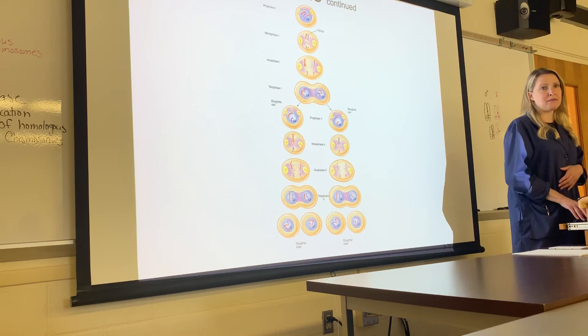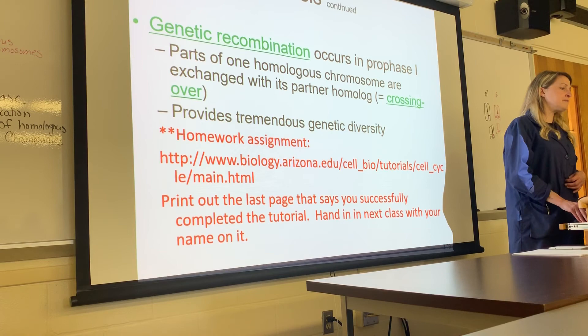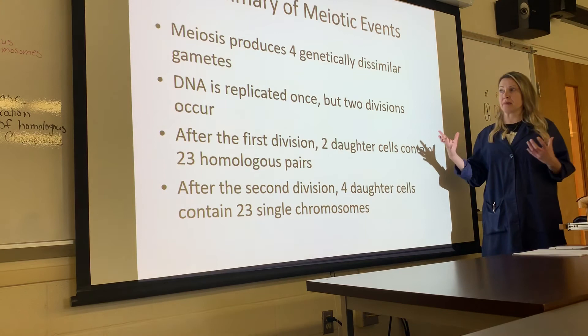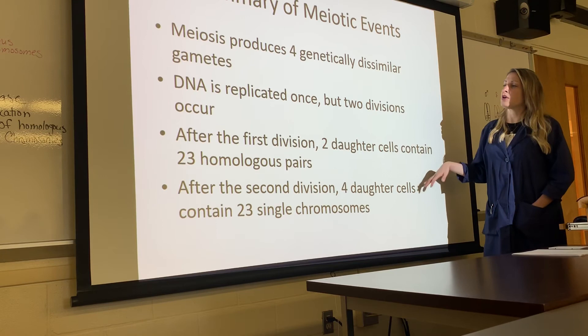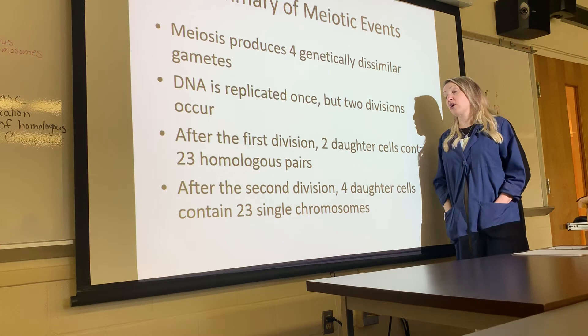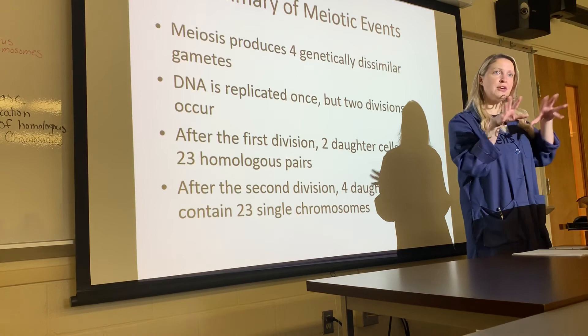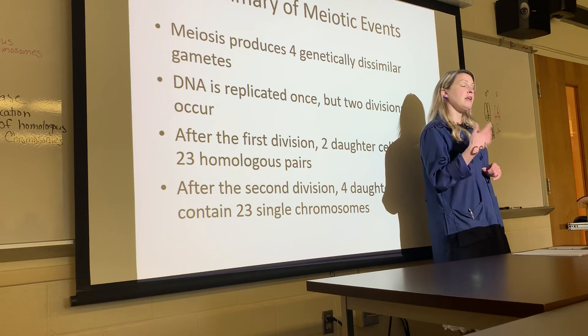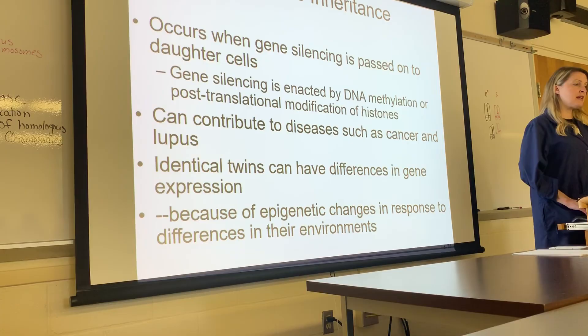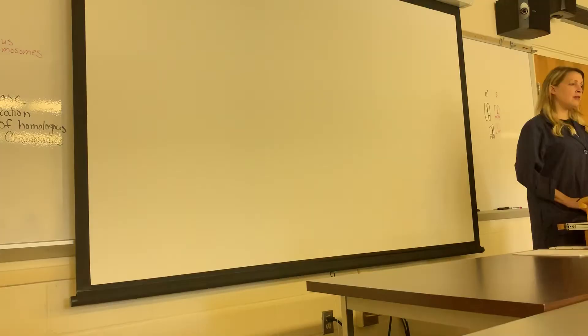In summary: meiosis produces four genetically dissimilar gametes, or sex cells. DNA is replicated once but two divisions occur. After the first division, you have two daughter cells containing 23 homologous pairs — different due to crossing over. After the second division, you have four daughter cells each with 23 single chromosomes under normal circumstances. We're skipping epigenetic inheritance, so if there are no questions, you can take a 10-minute break.